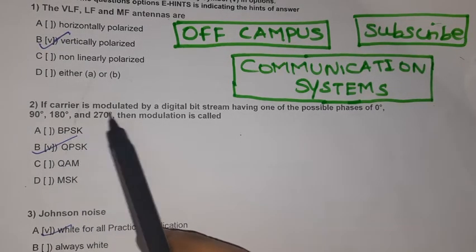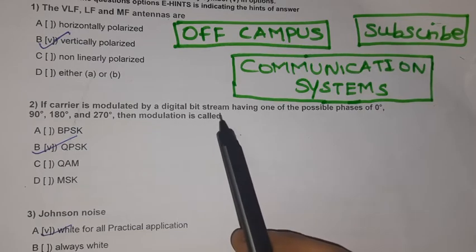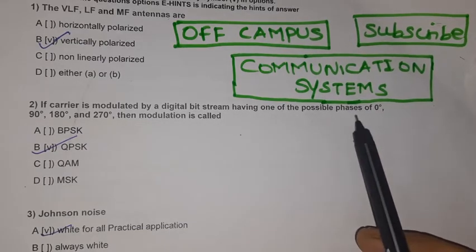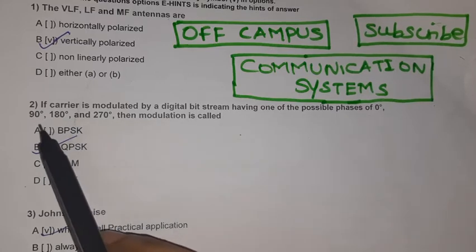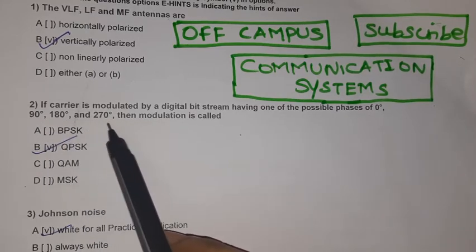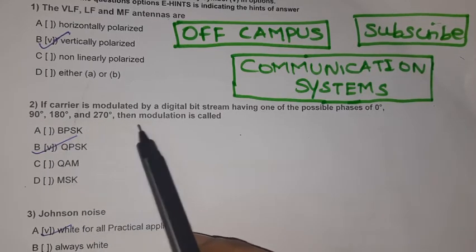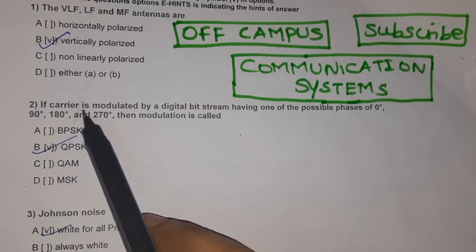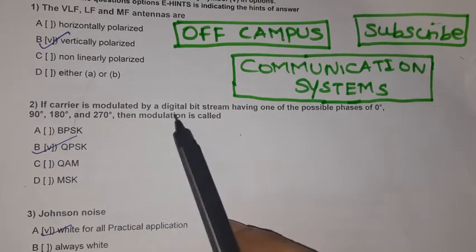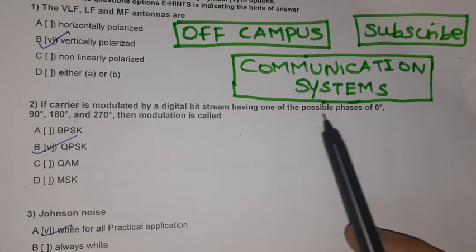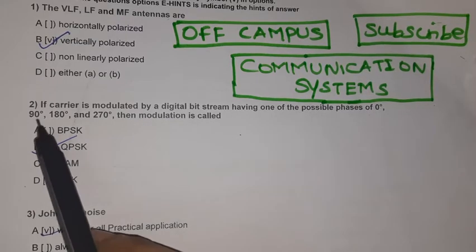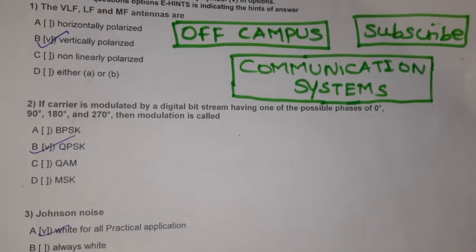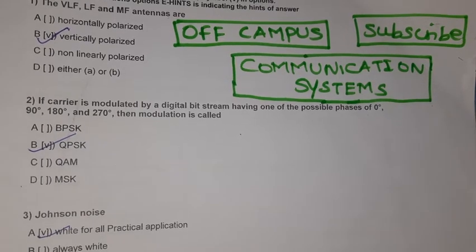Question 2: If a carrier is modulated by a digital bit stream having one of the possible phases of 0°, 90°, 180°, and 270°, then the modulation is called QPSK — Quadrature Phase Shift Keying.